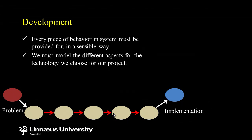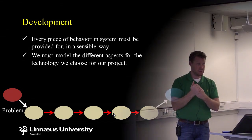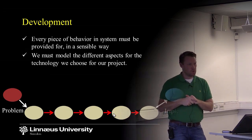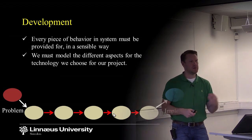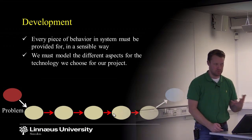So we have different stakeholders requiring different models, different purposes requiring different models, and implementation technology requiring different types of models — several different dimensions. If we want to choose the right models, we have to figure out these dimensions first so that we can select the most appropriate model for what we want to model and describe.